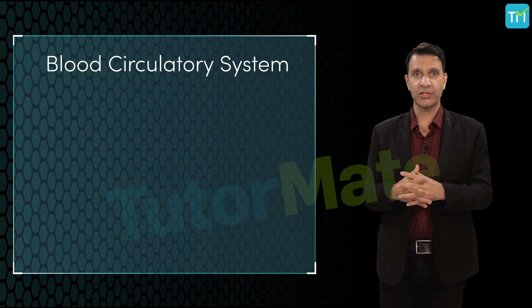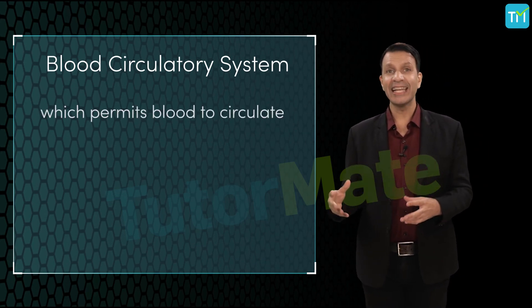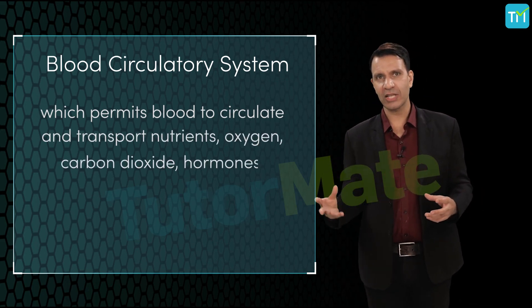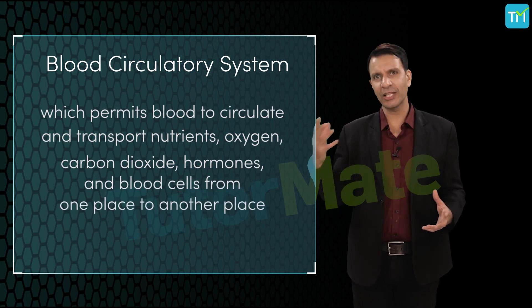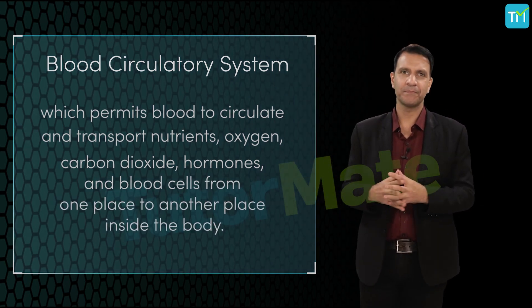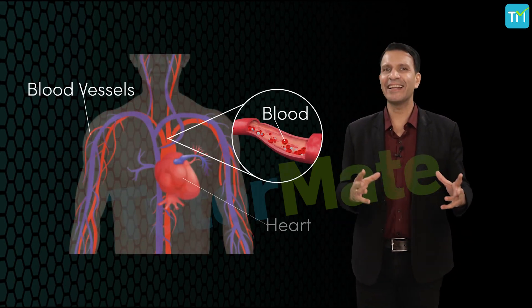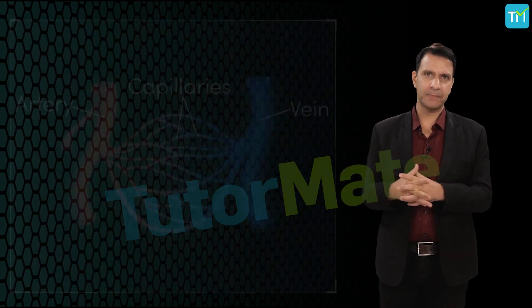The blood circulatory system is that system which permits blood to circulate and transport nutrients, oxygen, carbon dioxide, hormones, and blood cells from one place to another place inside the body. It comprises blood and blood vessels and the heart. Now blood vessels are of three types.